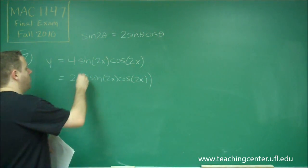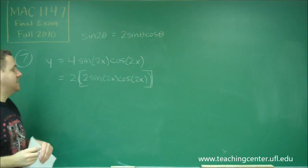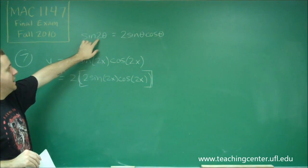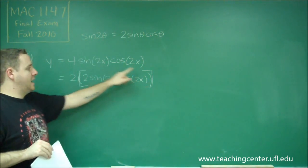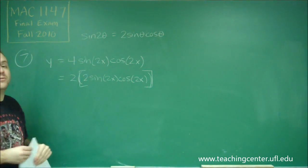So that means that this whole part here, let me put this in brackets, this whole part there in brackets is actually equal to sine of double whatever these angles are. So since our theta is 2x, then sine of 2 theta would be sine of 4x.